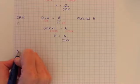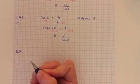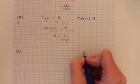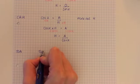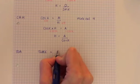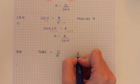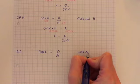And the last one is TOA. So we've got tan X equals O over A and we're going to work out A.